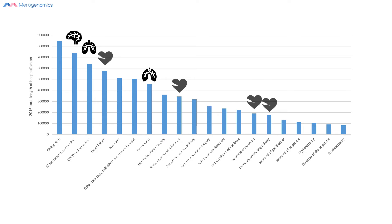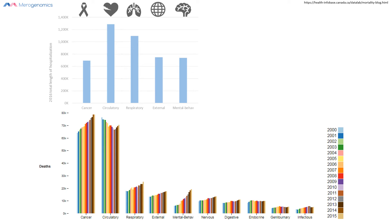Next in line are cardiovascular conditions. The globe icon denotes external conditions and the ribbon denotes anything related to cancer treatment. Comparing the top reasons for hospitalization with the top reasons for death, they correlate with one another, with the exception of potentially cancer, at least for the top five reasons.